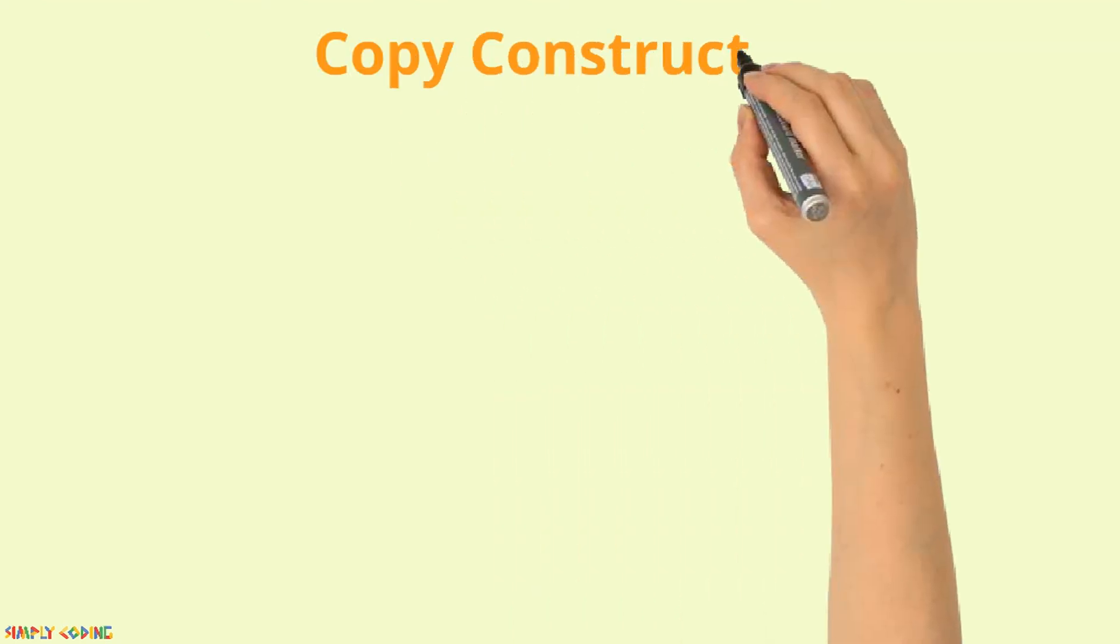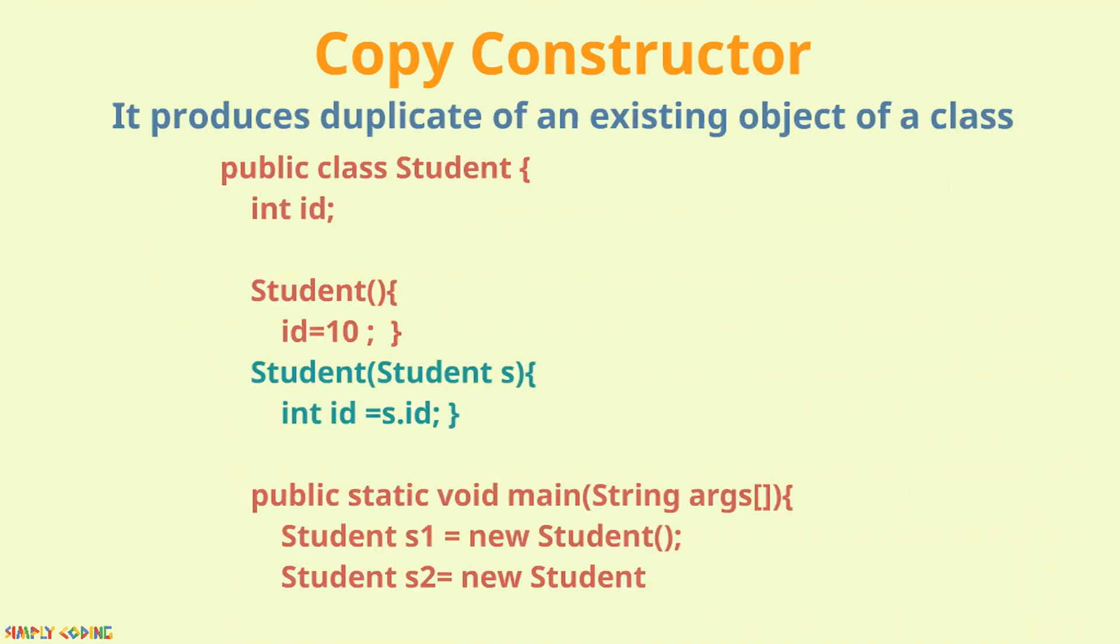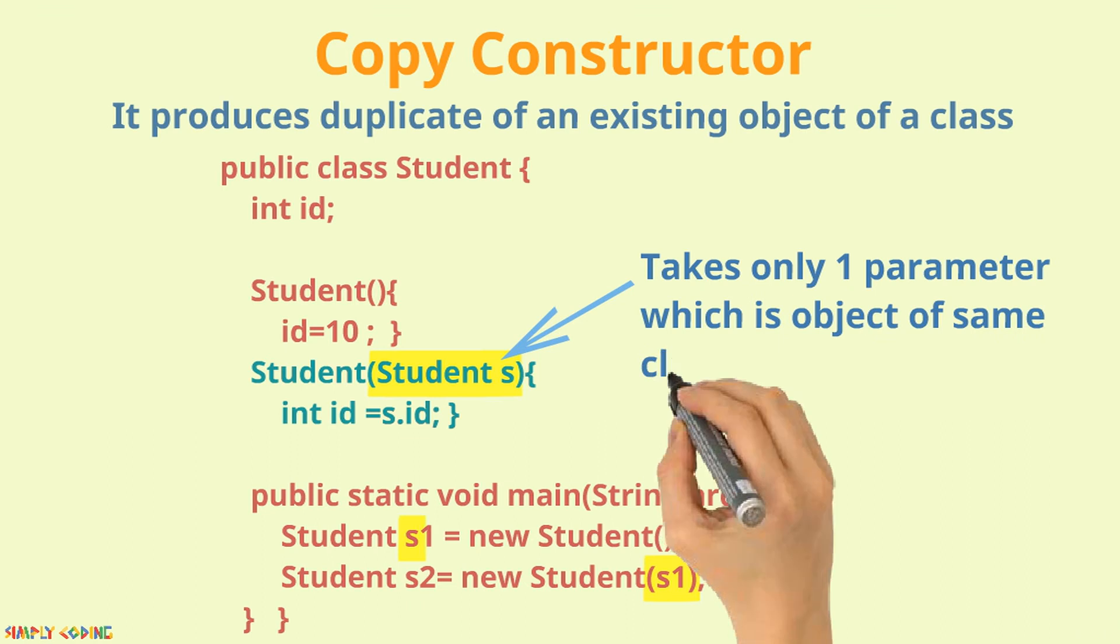Next, we will learn about copy constructor. A copy constructor produces duplicate of an existing object of the class. As shown in the example here, it takes only one parameter which is an object of the same class.